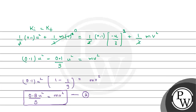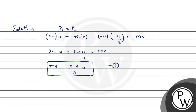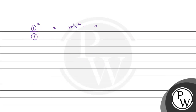Now, dividing equation 1 squared by equation 2: m²v² = 0.16u²/9 from equation 1 squared, and mv² = 0.8u²/9 from equation 2. Dividing: v², u², and 9 cancel out, leaving m = 0.16/0.8.